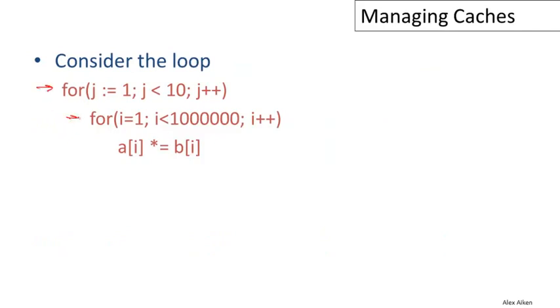What do we have here? We have an outer loop on J, an inner loop on I. In each iteration of the inner loop, we're reading from B sub I, some vector B sub I, performing some computation on that value, and storing the results into the I-th element of the A vector.